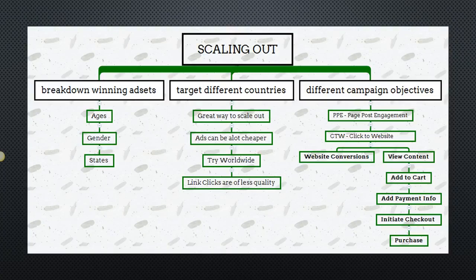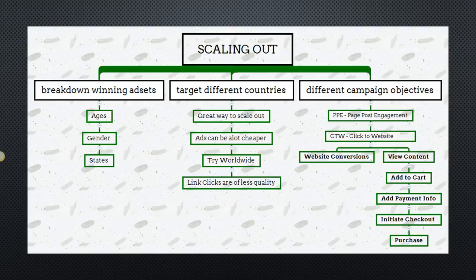Note that when targeting worldwide, link clicks can be of less quality. Your ads may get distributed in countries where ads are rarely shown, so you might get a lot of link clicks but not many conversions. This means your cost per visitor to your website will be lower, but keep an eye on conversion quality.